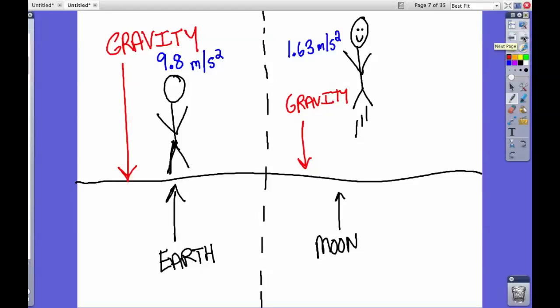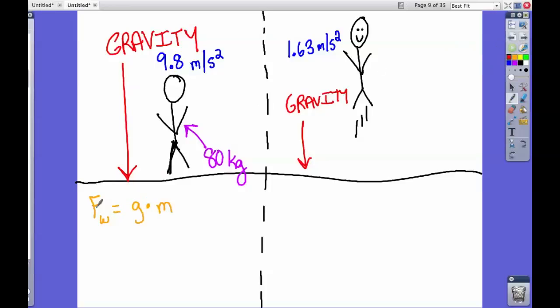Let's figure out what my mass is on Earth. My weight here is 80 kilograms. F_w, which means force of weight, equals gravity times mass. So we put in 80 kilograms for force of weight. We know that gravity is about 9.8 meters per second squared. To make the problem easier, I'm going to make it 10 meters per second squared.